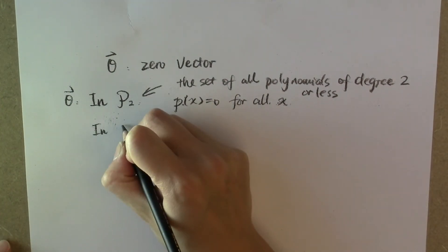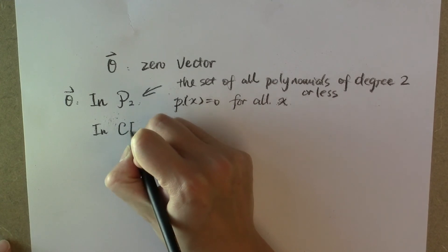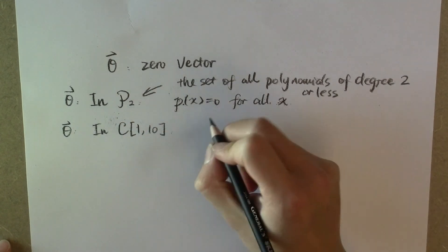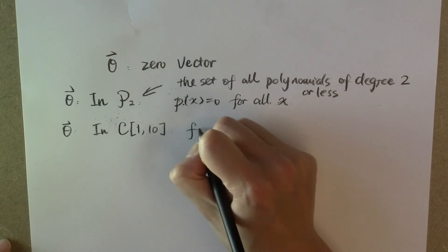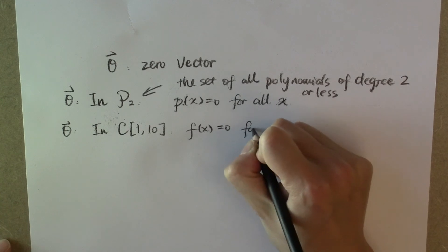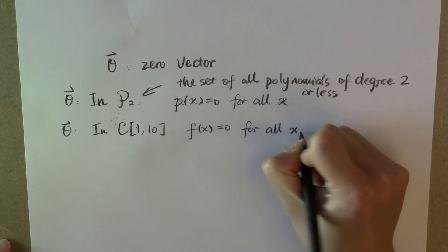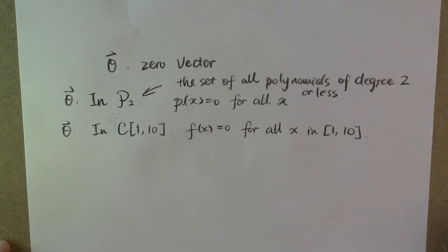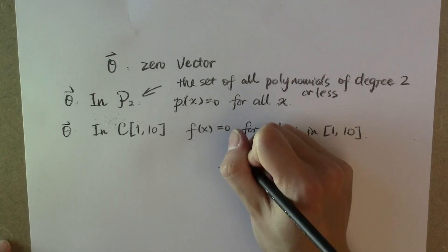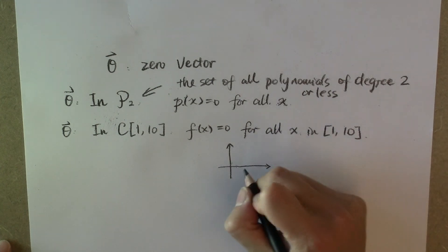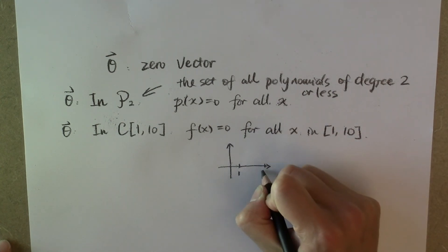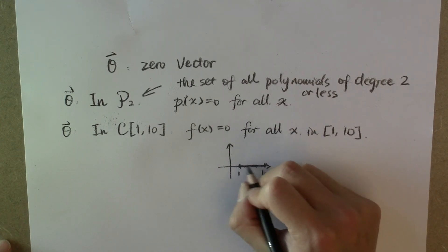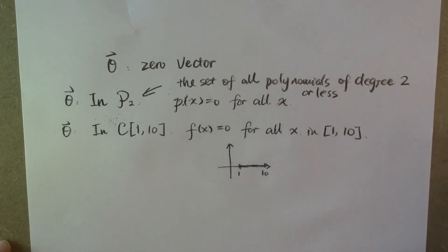And in the vector space C[1,10], which is the set of all continuous functions from 1 to 10, the zero vector is the function f(x) = 0 for all x in [1,10]. If you plot the curve of this function, from 1 to 10 it's a segment lying on the x-axis from x = 1 to x = 10.